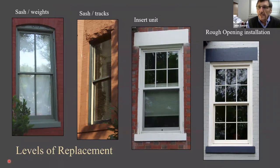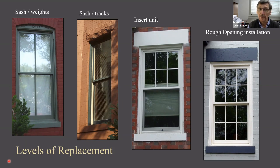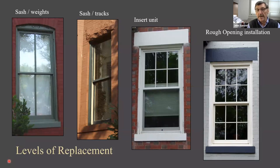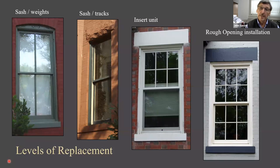Now let's look at how you install the window. There are really four different levels of replacement. You can replace just the sash using the existing operation system — whether spring balance or weights and pulleys. You can do a sash replacement that involves a new tracking system, keeping the existing frame. Third, you can take the parting bead out and put in a whole new unit designed to snug up behind the blind stop, putting a frame within a frame. Finally, if you take everything out of the opening and put in a whole new unit designed for a rough opening, you can get the best match, but you have the most disruption.